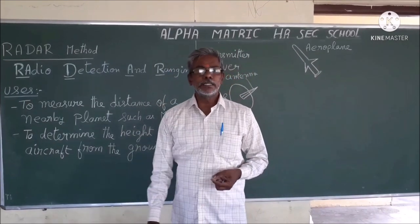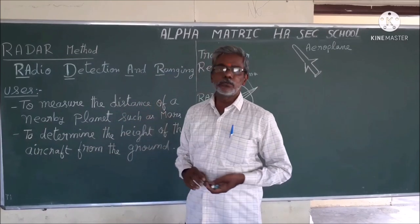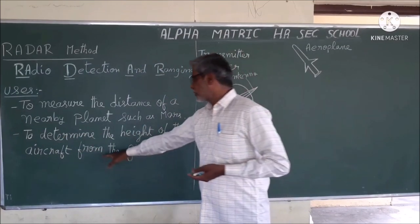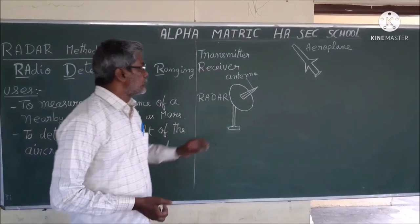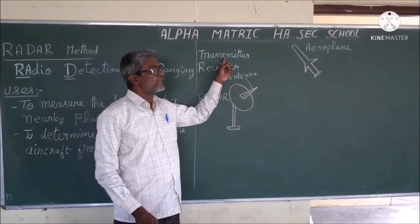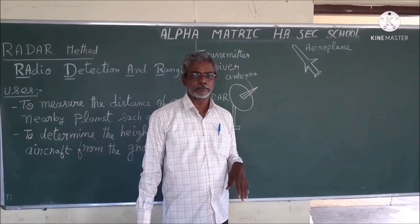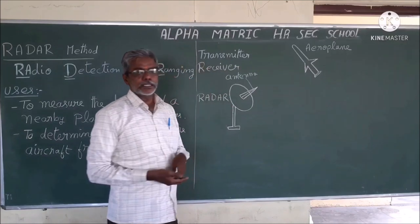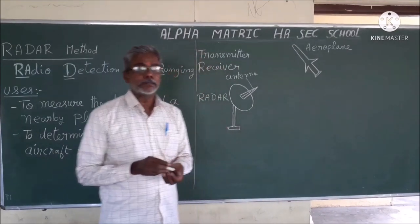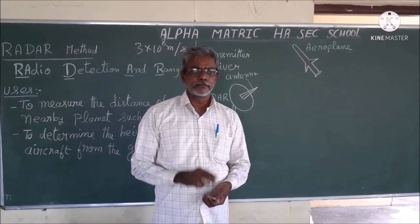Ranging is nothing but distance. Where is radar used? It is used to measure the distance of nearby planets such as Mars. It is also used to find the height of an aircraft from the ground. A radar has two components: a transmitter and a receiver. The transmitter transmits the signal, and the receiver receives the signal. The signal is in the form of electromagnetic waves, and it travels at 3×10⁸ meters per second, which is equal to the speed of light.